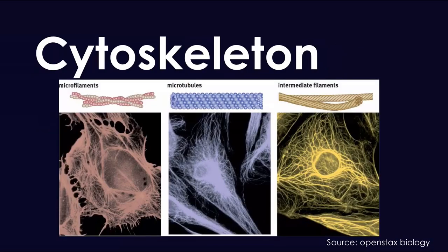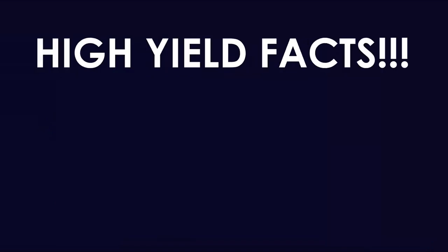That is pretty much all you need to know about the cytoskeleton. Let's talk about high yield facts from both videos. Number one: the nucleus controls the cell via DNA — very important.